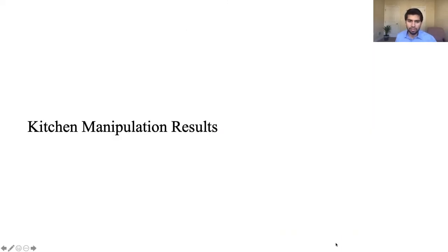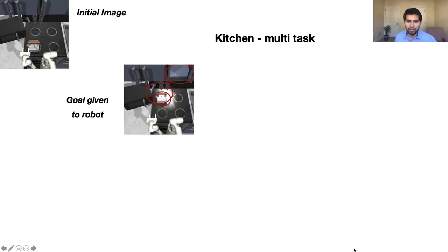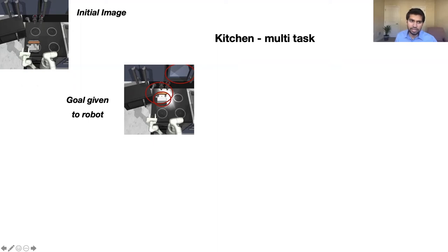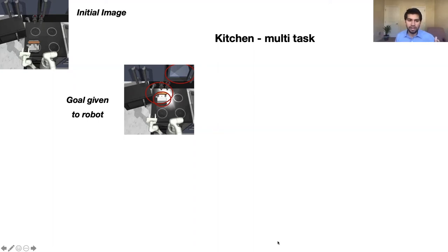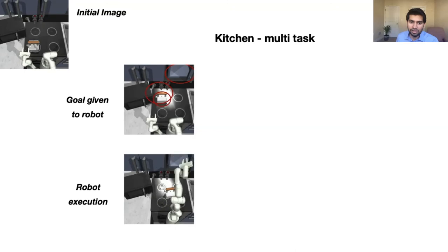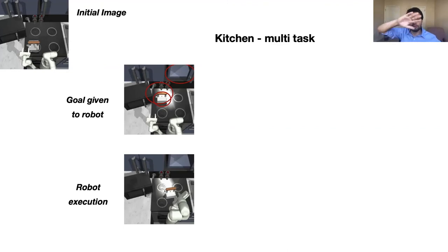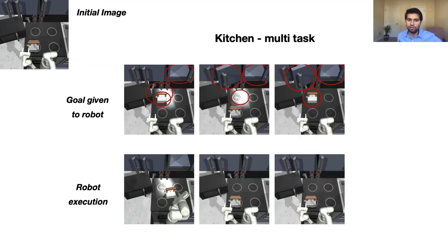Let's see results on the hardest task — the kitchen. Here is a multitask result: the initial image shows three things to achieve — the kettle moved to a new position, the light turned on, and the cabinet opened. The robot has not been supervised at training or testing time. It moves the kettle, turns on the light, and opens the cabinet, all on its own, outputting low-level actions — thousands of actions total across all these tasks. It can also open both cabinets. Only our method can do many of these things while prior methods completely fail to generalize.